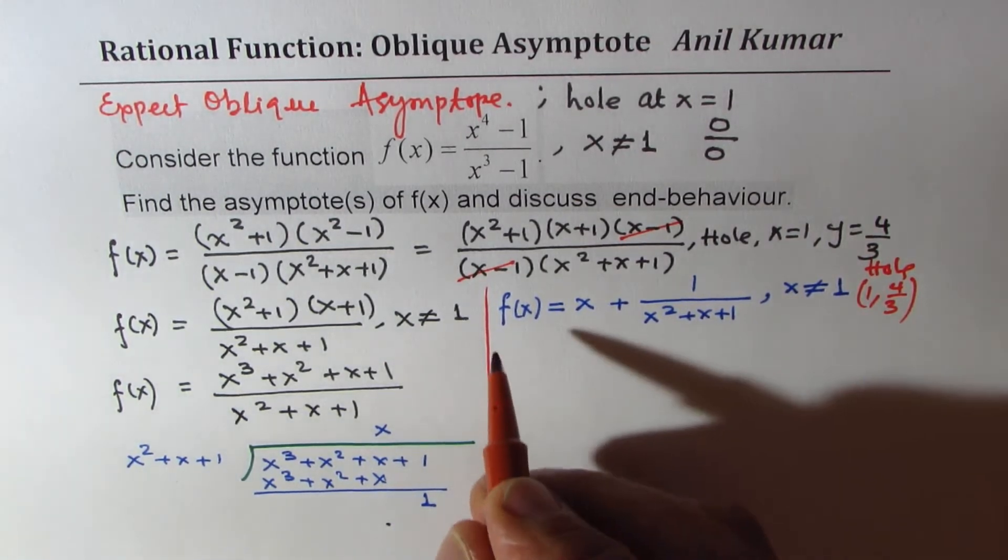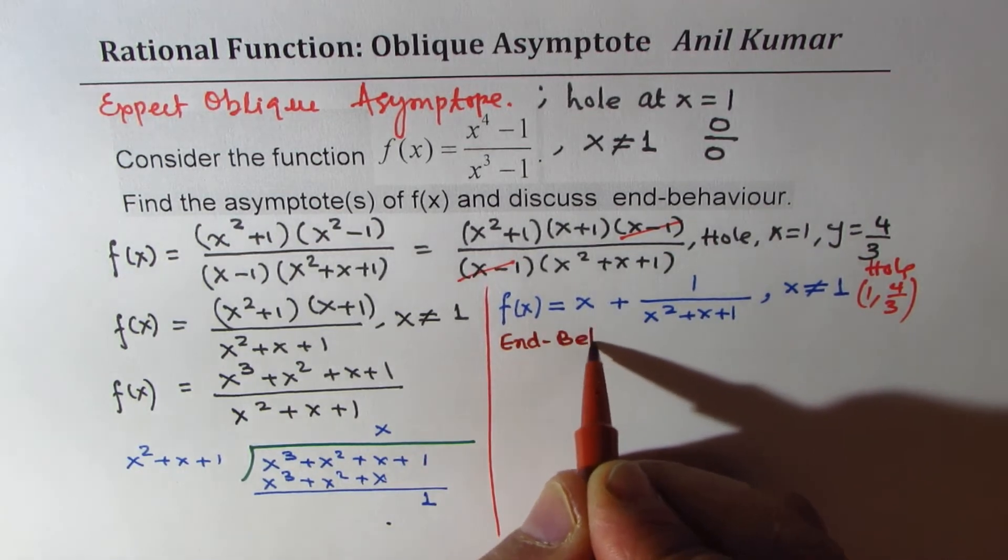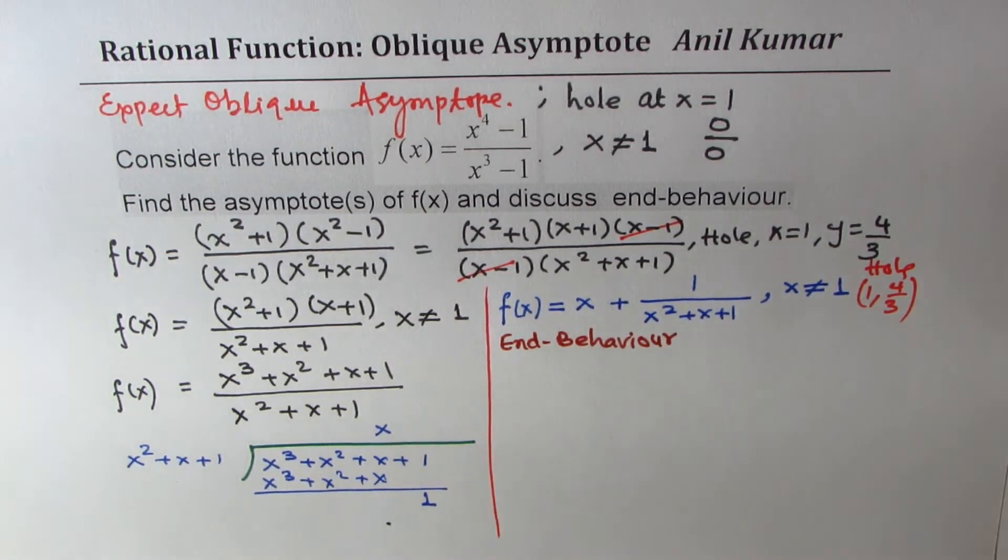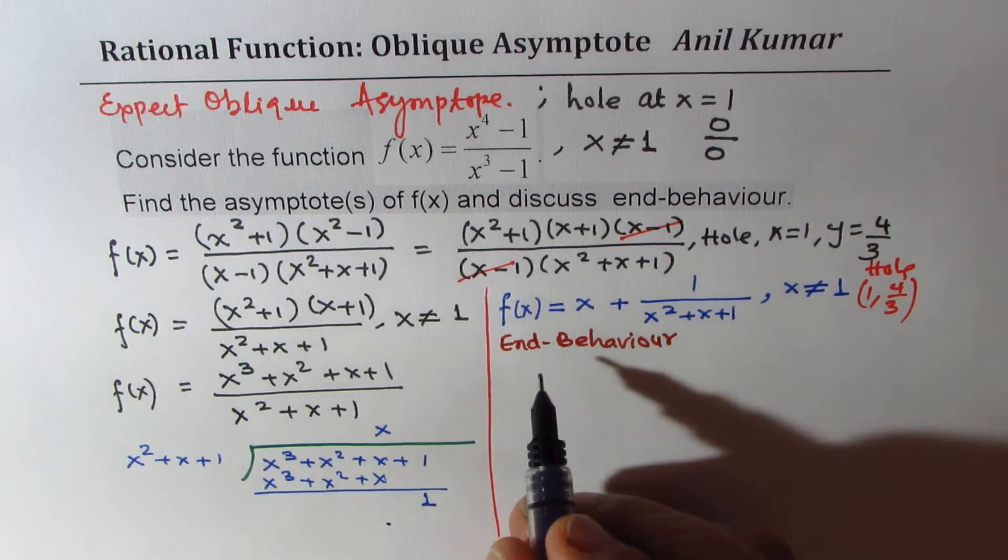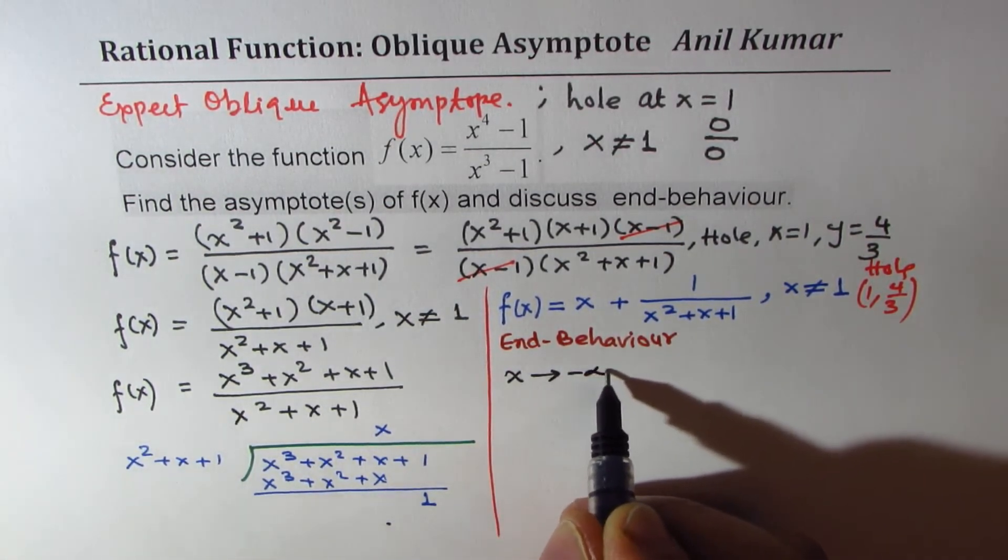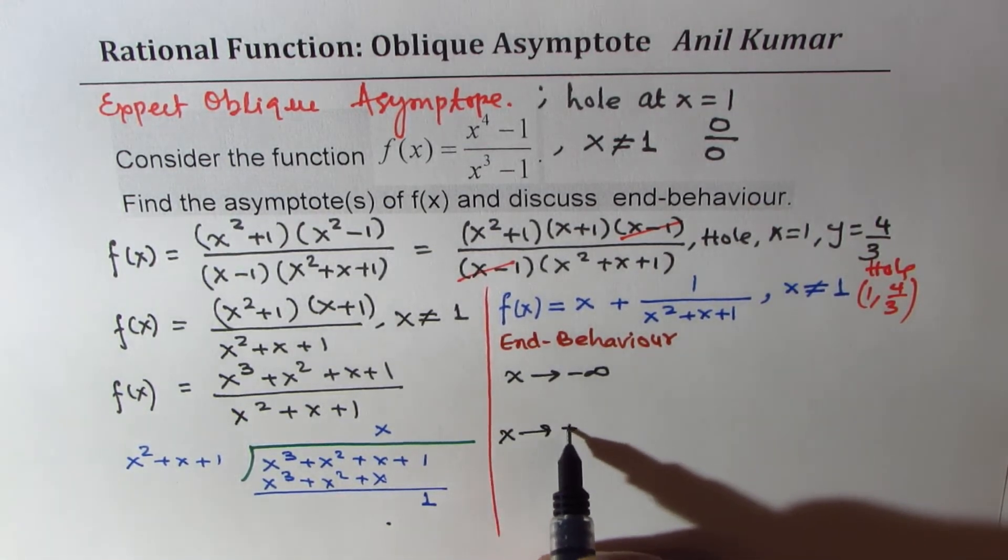So what is end behavior? End behavior is what happens when the x value approaches positive large value or negative. So we have to figure out what happens when x approaches negative infinity and what happens when x approaches positive infinity.